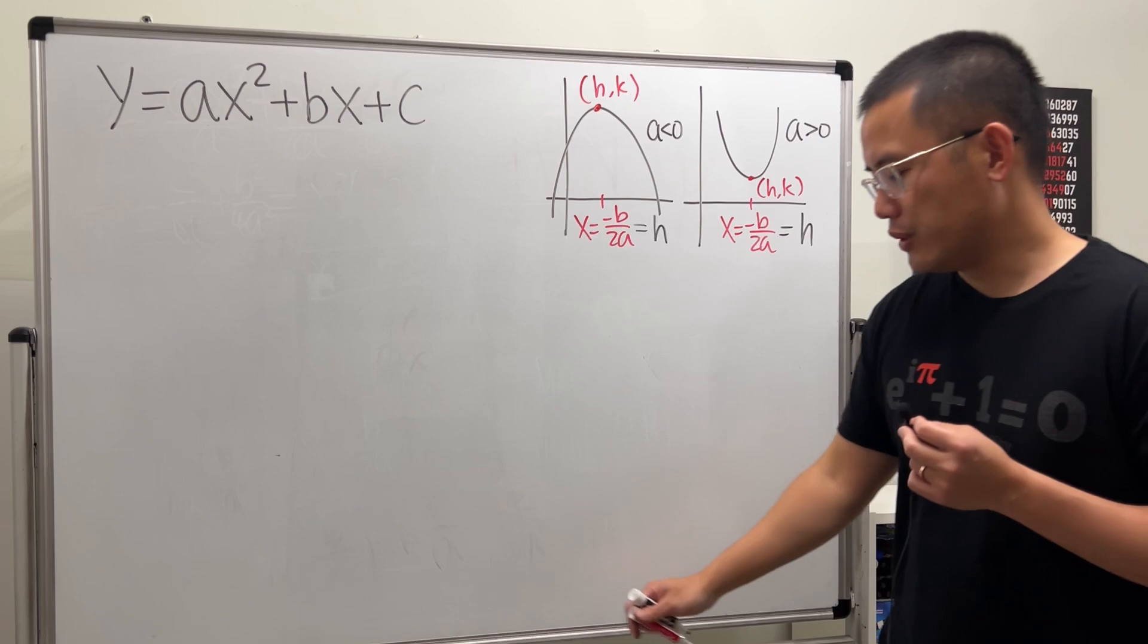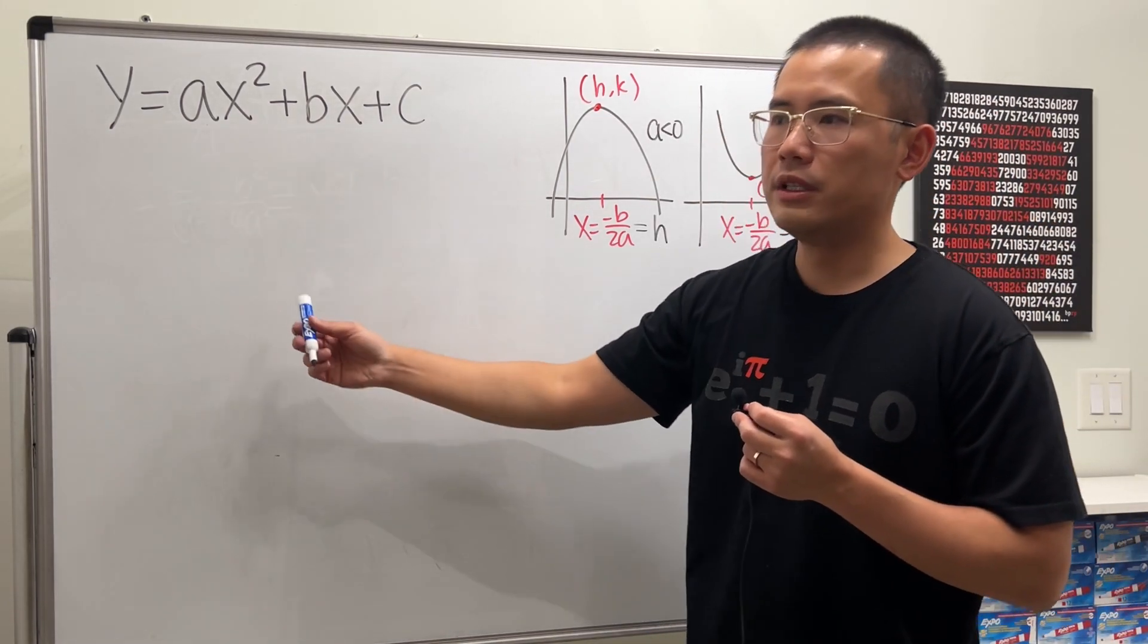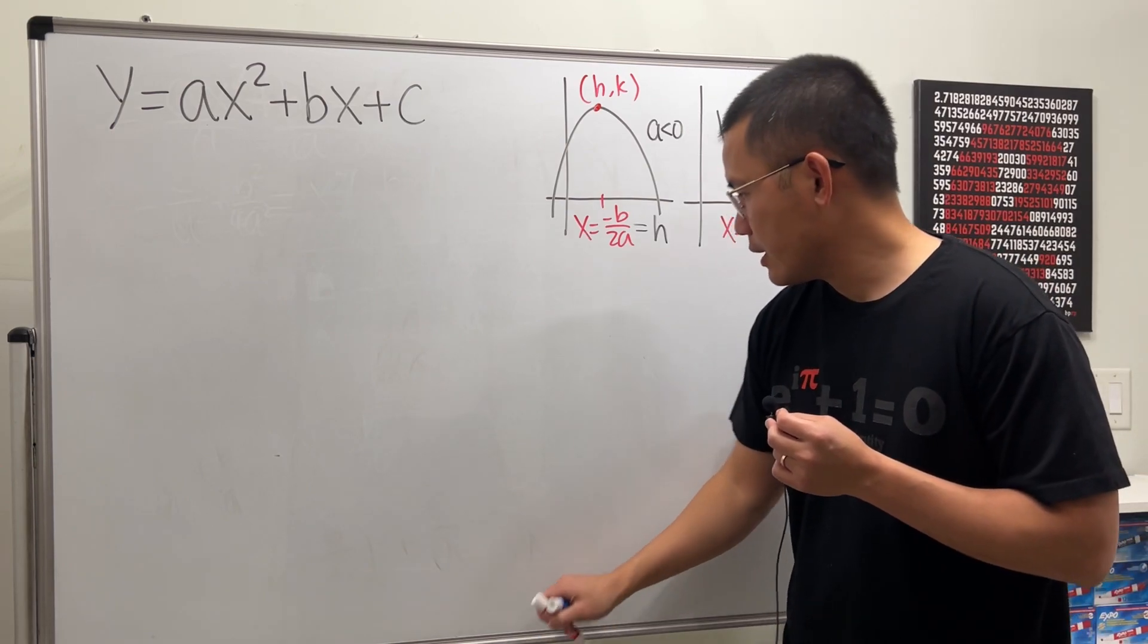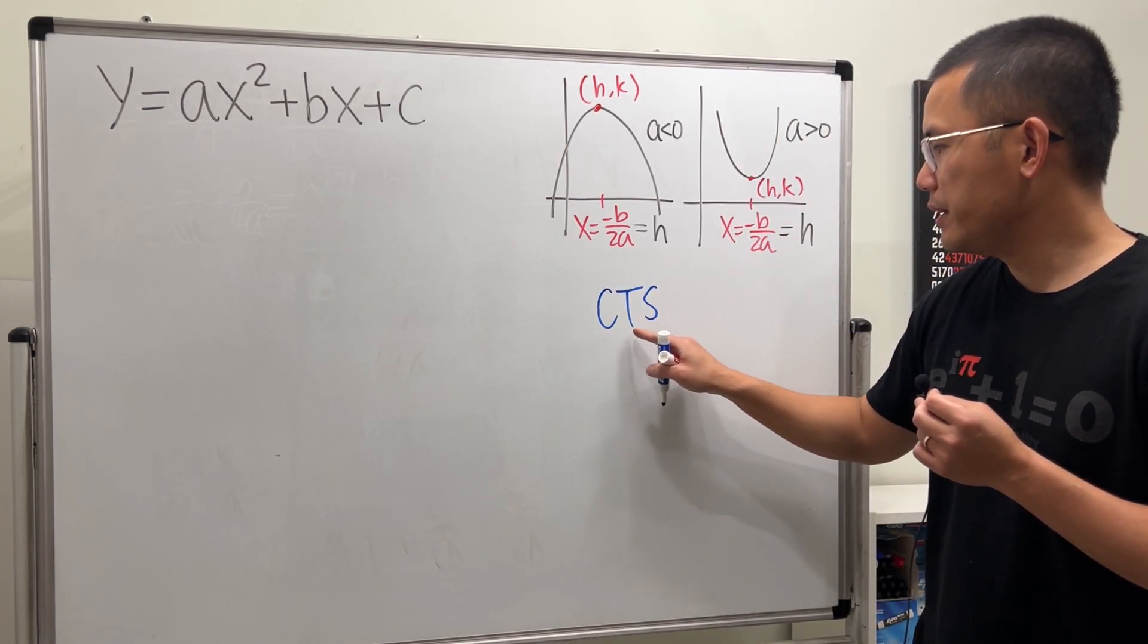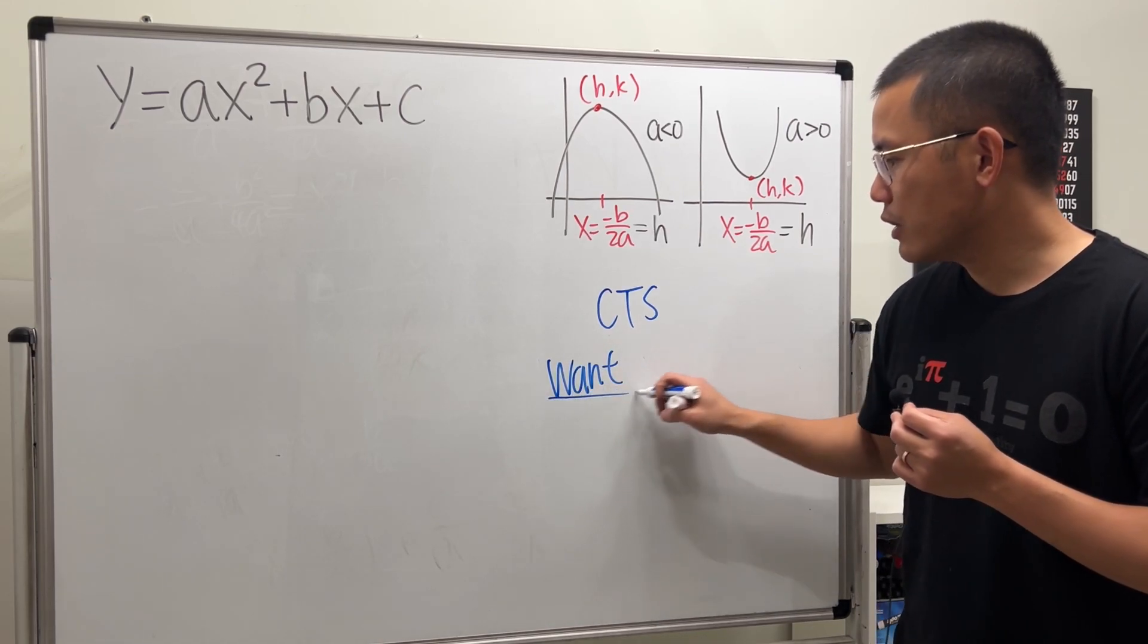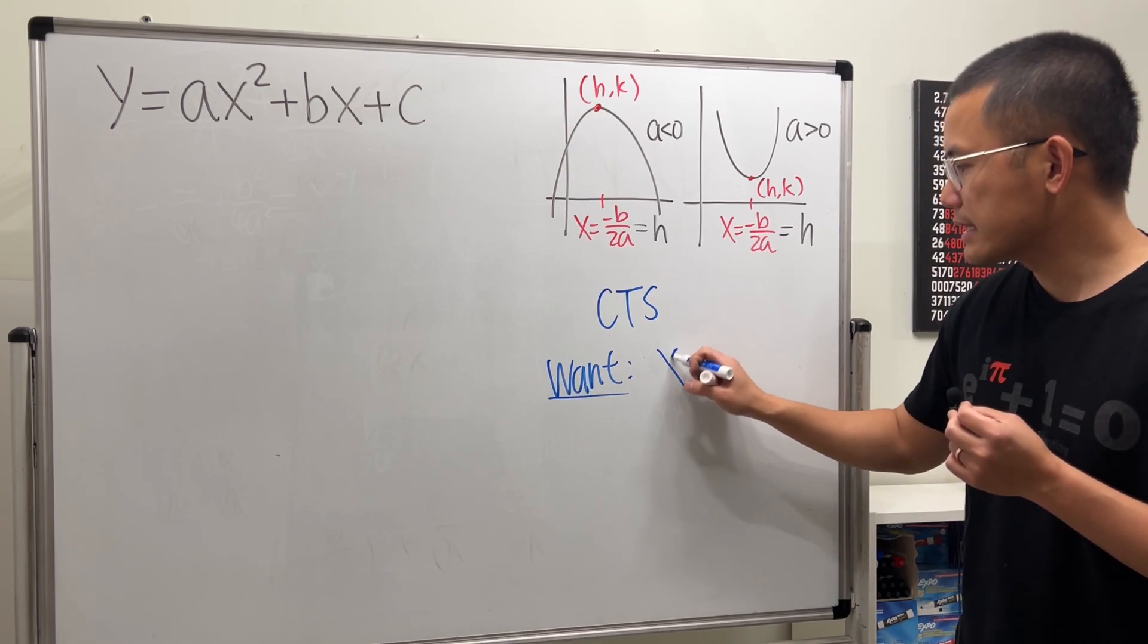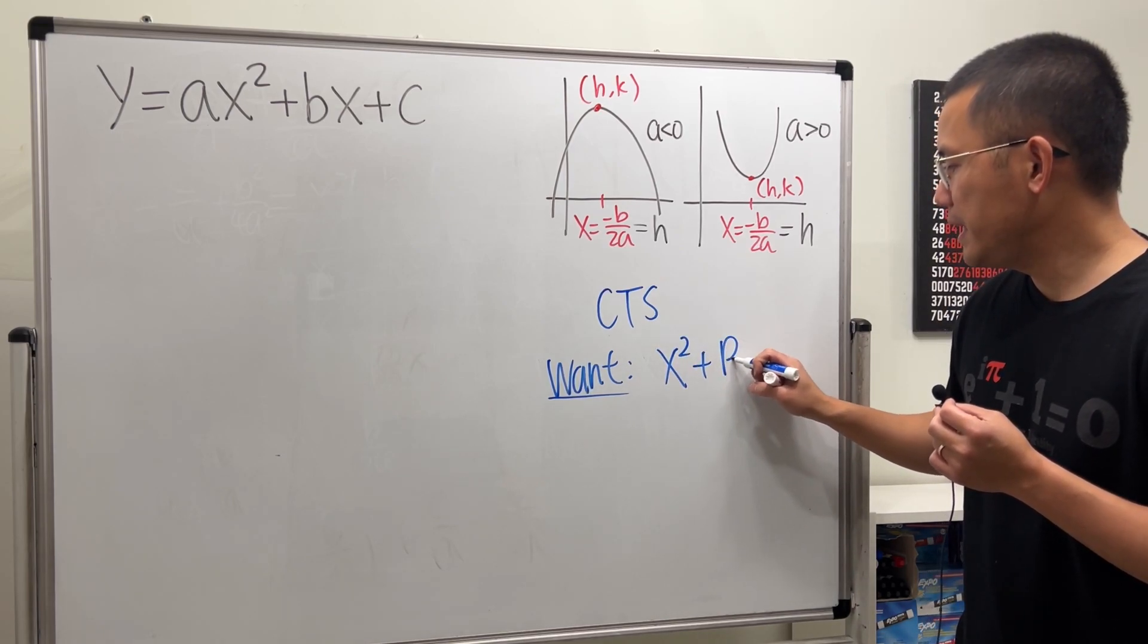I'll show you guys two ways plus a bonus way of why this is true. Let's start with the first way, which is we are going to complete the square from the standard form so we can get to the vertex form. So, CTS for completing the square.